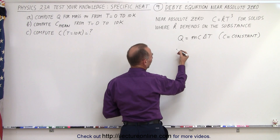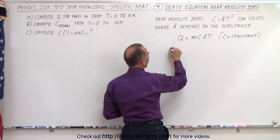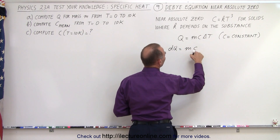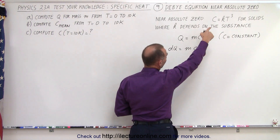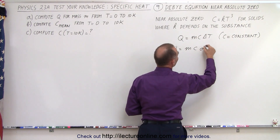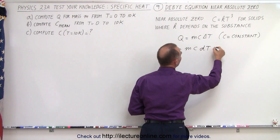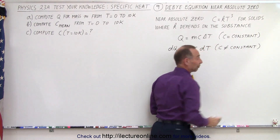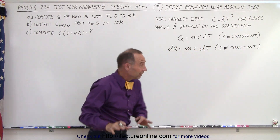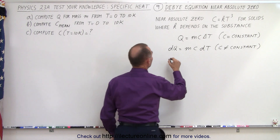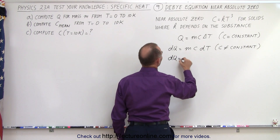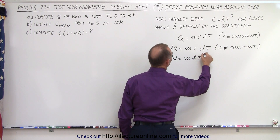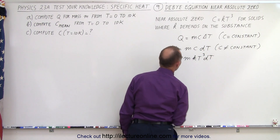If C is not a constant, we have to write it as a differential equation where DQ equals M times C — whatever C is, in this case KT cubed — times DT, when C is not equal to a constant. When we plug in the value for C, we get DQ equals M times KT cubed times DT.